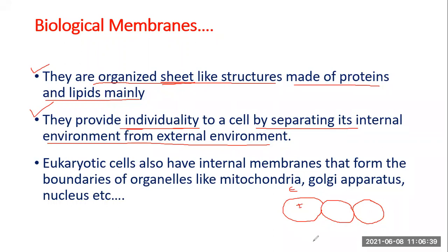Your body is made up of different types of cells — a group of specialized cells is called a tissue. All cells are separated from their extracellular environment with the help of this biological membrane. In eukaryotes, in higher organisms like you and me, besides the cell membrane, within the cell you also have organelles whose boundaries are made up of biological membrane.